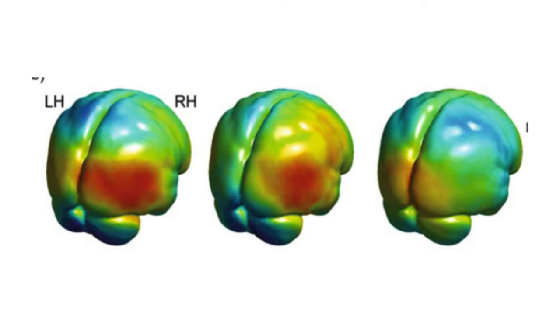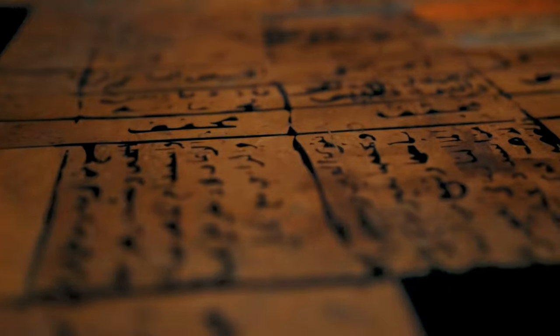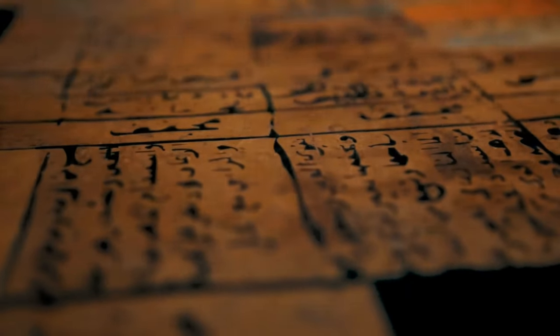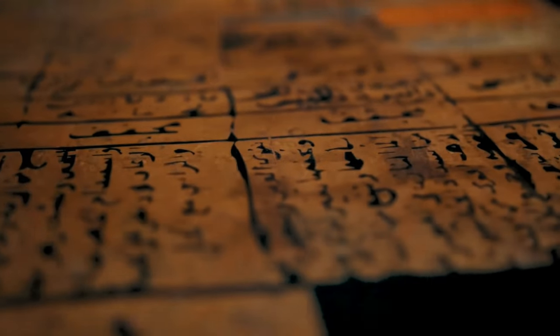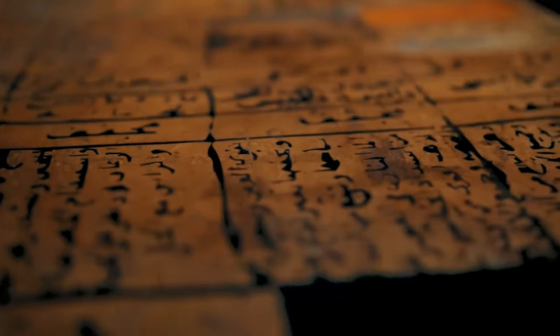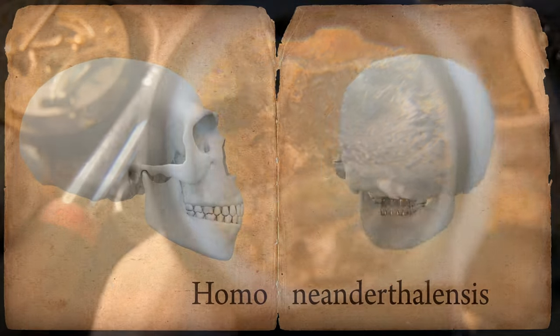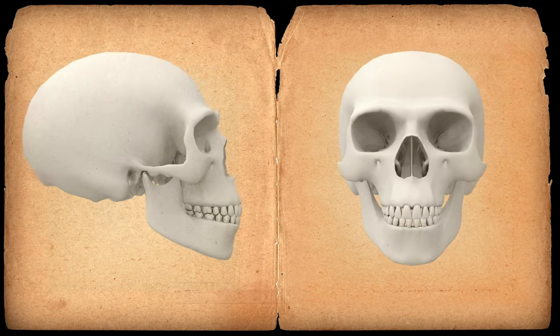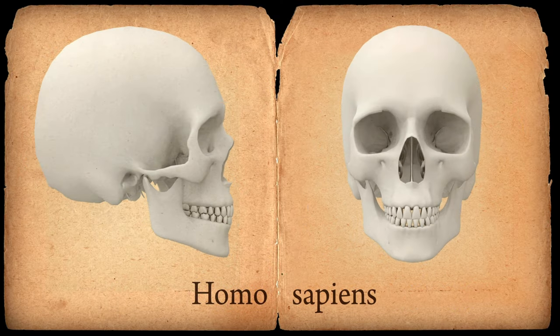Interestingly, Neanderthal cerebellums showed an asymmetry, with the right side being significantly smaller than the left. This asymmetry might affect connections to the left prefrontal regions, crucial for language processing. However, this finding should be taken with caution due to potential preservation issues with Neanderthal fossils. Future studies with more cases are needed to confirm this asymmetry.